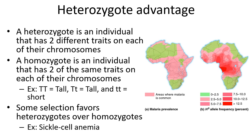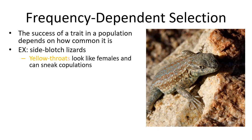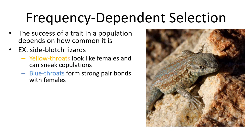Frequency-dependent selection is where the success of traits in a population depends on how abundant those traits are. The presence, absence, or abundance of a trait will determine which traits are successful going forward. A great example is side-blotch lizards of the northwest — three color morphs exist in males. Yellow-throated males are smaller and look like females, acting as sneaker males. Blue-throated males form strong pair bonds, staying so close to females that nothing else can mate with them. Orange-throated males are the biggest and strongest, outcompeting smaller individuals.